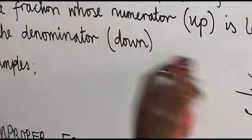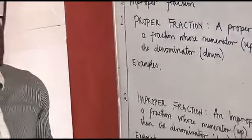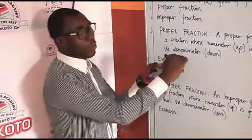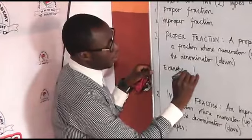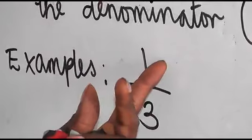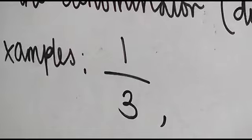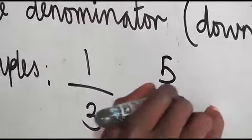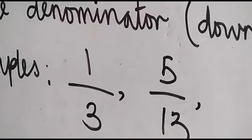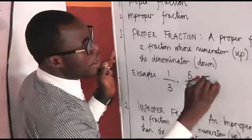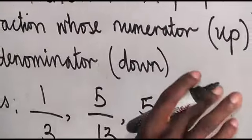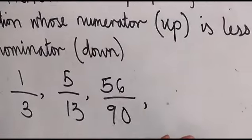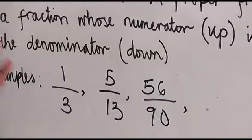Now let's go to the number form. When we talk about a fraction in number form, any number that is smallest will be at the top — which is the numerator — and the bigger number will be at the denominator. For instance, 1 over 3: 1 is smaller while 3 is bigger. Another example: 5 over 13. And we can also have 56 over 90. So, as long as the number at the top is smaller and the denominator is bigger, that gives us a proper fraction.